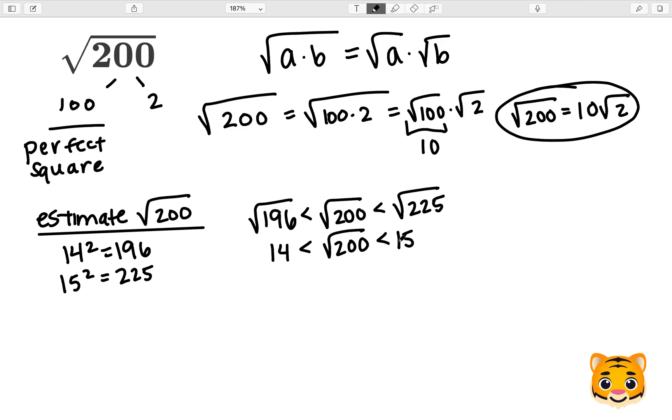Now we know that the square root of 200 is between 14 and 15. In order to find the integer that the square root of 200 is closest to, we can look at the difference between 200 and our perfect squares.